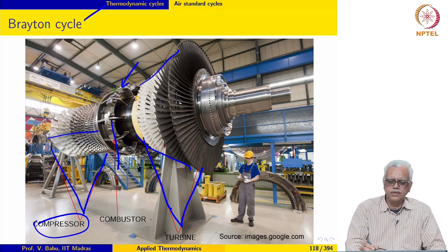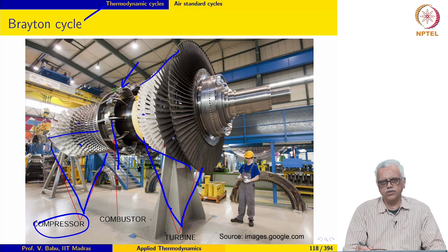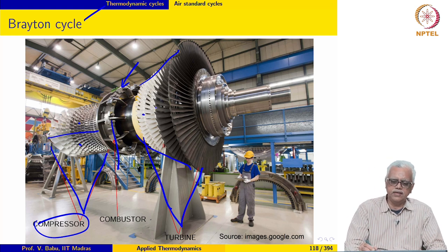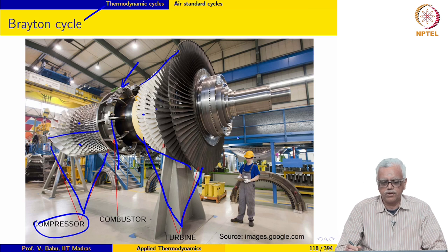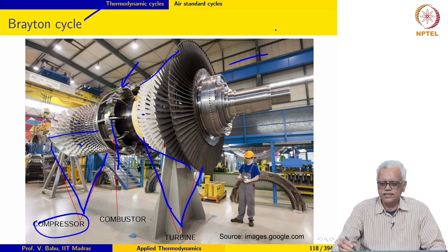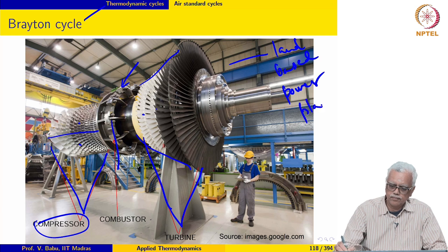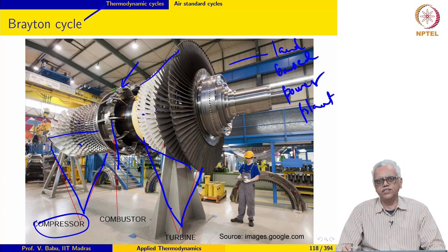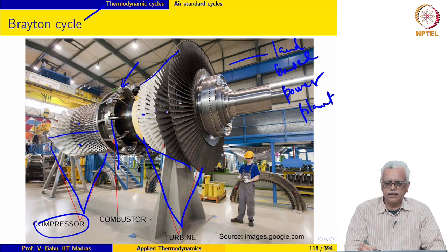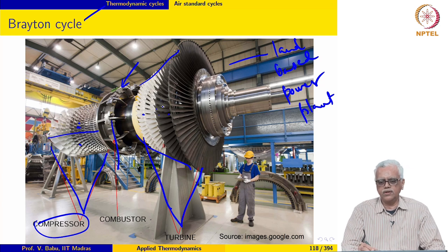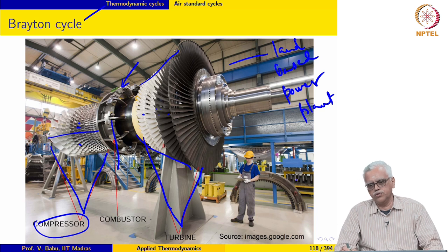After undergoing expansion, the flow leaves the engine. As the flow undergoes expansion, power required to run the compressor is extracted from the turbine, and the rest of the power is used to run the generator to produce electricity. This is a realization for a land-based power plant used for power generation. The output from the turbine is partly used to run the compressor and the rest runs a generator which produces electricity.